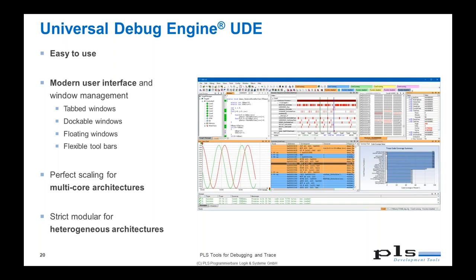The AURIX has up to six TriCore cores, but also an HSM core — the Hardware Security Module — which is also supported by UDE, as well as the GTM, the Generic Timer Module. The GTM is a completely different core architecture from Bosch, providing high-performance timer analysis, signal generation, and more.